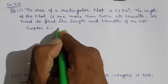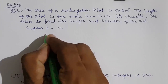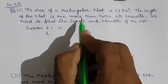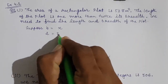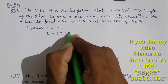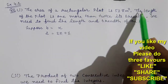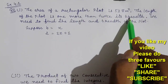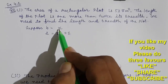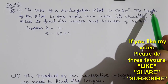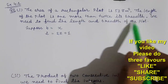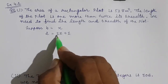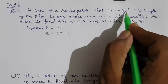Suppose breadth equals x. The length is one more than twice its breadth — twice the breadth is 2x, and one more means plus 1. Every time when length is given on the basis of breadth, we suppose breadth as x. Students sometimes take length as x, but here we suppose breadth as x, so length is 2x + 1.